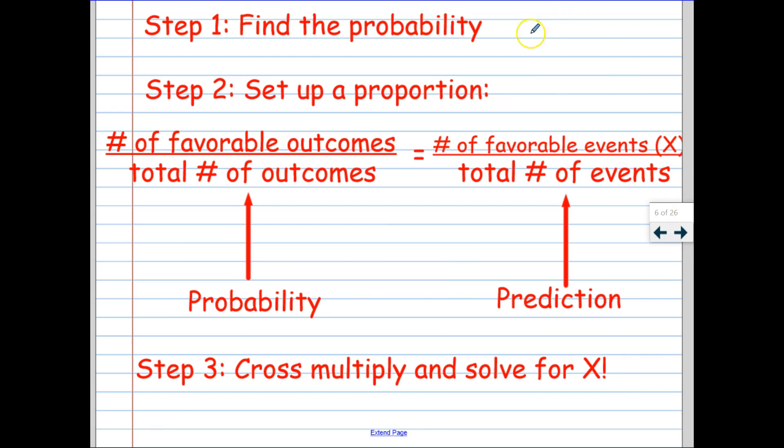Okay, now that you've gotten it written down, step one is just to find the probability like we've been doing in all these lessons. Step two is to set up a proportion. We're going to put probability on one side, and we're going to put our prediction on the other. We're going to use x to stand for whatever it is we don't know.